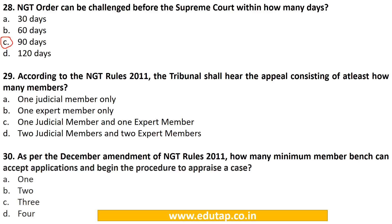MCQ 29: According to the NGT Rules 2011, the tribunal shall hear the appeal consisting of at least how many members? A. 1 judicial member only, B. 1 expert member only, C. 1 judicial member and 1 expert member, D. 2 judicial members and 2 expert members. The correct answer is C. 1 judicial member and 1 expert member. MCQ 30: As per the December amendment of NGT Rules 2011, how many minimum member bench can accept applications and begin the procedure to appraise a case? A. 1, B. 2, C. 3, D. 4. The correct answer is A. 1.